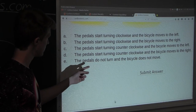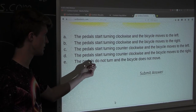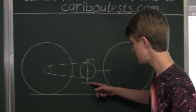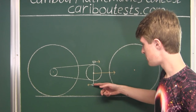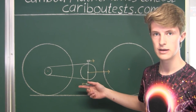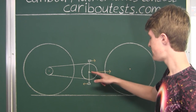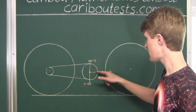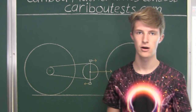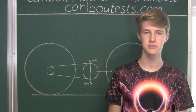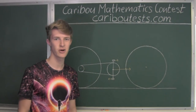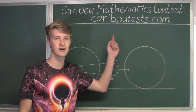For option E, the pedals do not turn and the bicycle does not move — this is not the case, because the vector for the bottom pedal is shorter in length than the vector of the bike frame in relation to the ground. Therefore, option E does not work, and the correct option is C. If you'd like to know more about this contest, please feel free to visit our website at cariboutests.com.